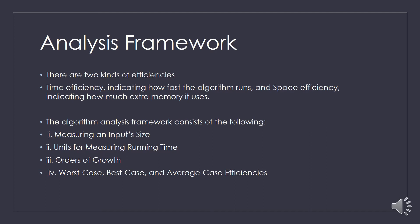First, let us learn about the analysis framework. There are two kinds of efficiency: time efficiency and space efficiency. Time efficiency is about how fast the algorithm runs, and space efficiency indicates how much extra memory it uses. Space efficiency deals with the memory used by a program, and time efficiency deals with the time used by the algorithm for running or completion of its task.